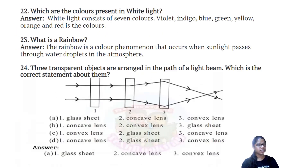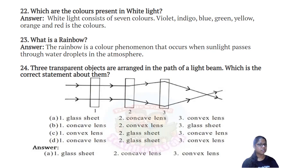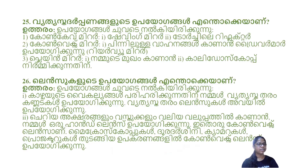Which are the colors present in white light? What is a rainbow? The rainbow is a color phenomenon that occurs when sunlight passes through water droplets in the atmosphere. This involves a glass sheet, a concave lens, and a convex lens placed in the demonstration.